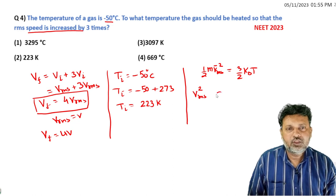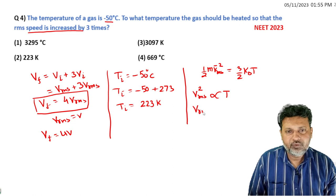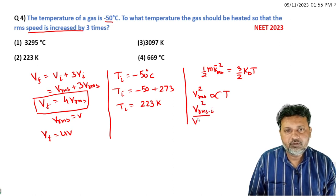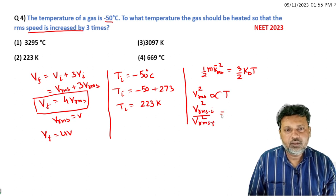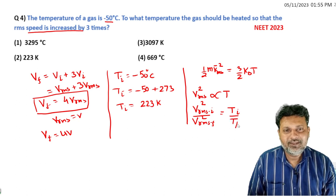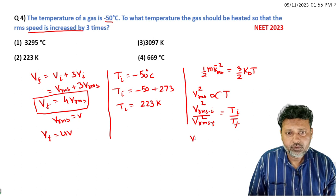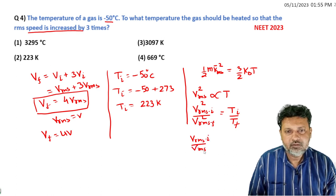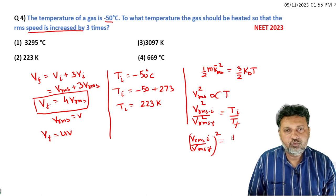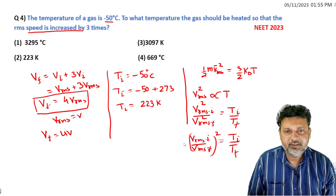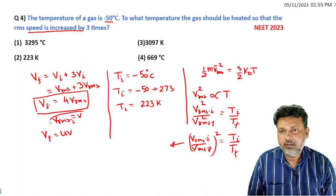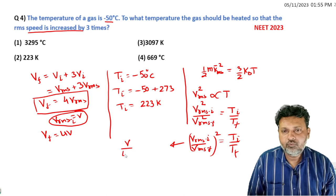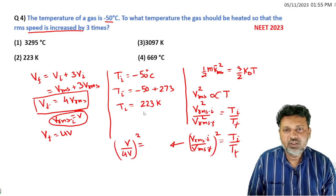So V_RMS squared is proportional to temperature. If I write this as: V_RMS final whole squared upon V_RMS initial whole squared equals T_final upon T_initial. The initial V value we took was V, and initial temperature is 223 Kelvin.